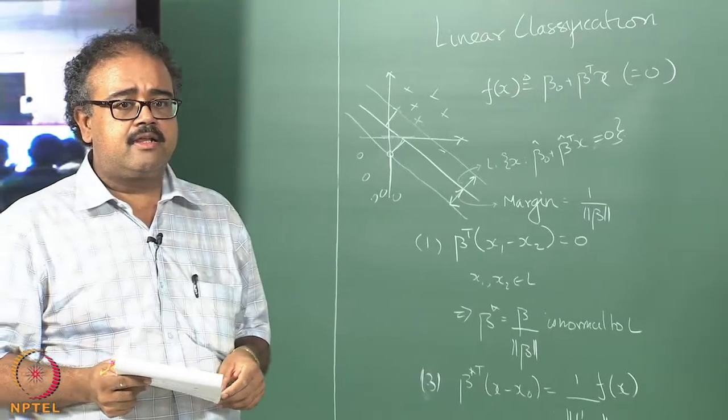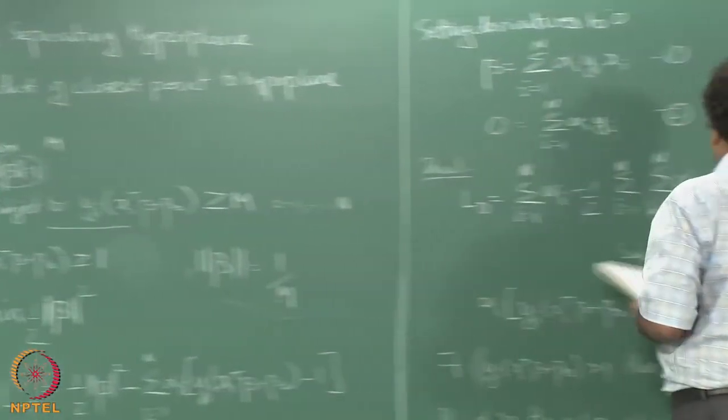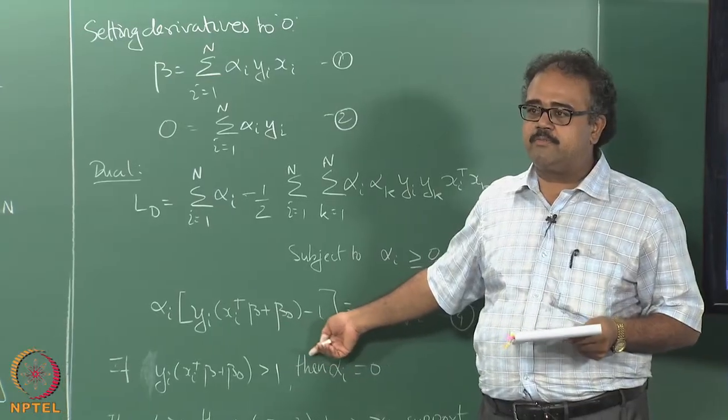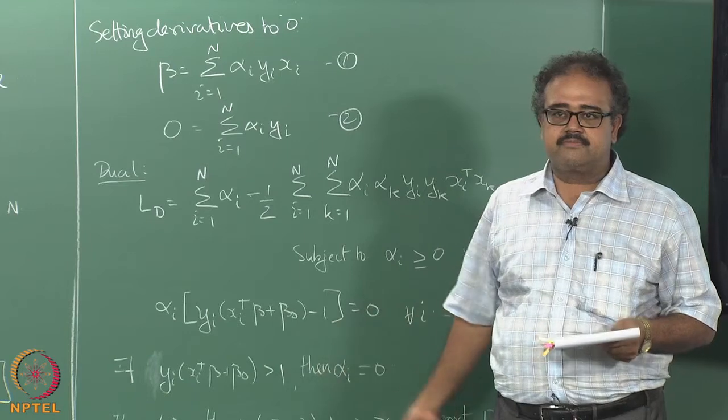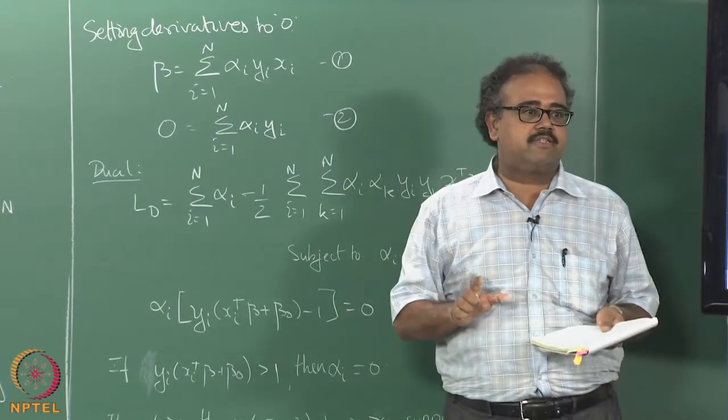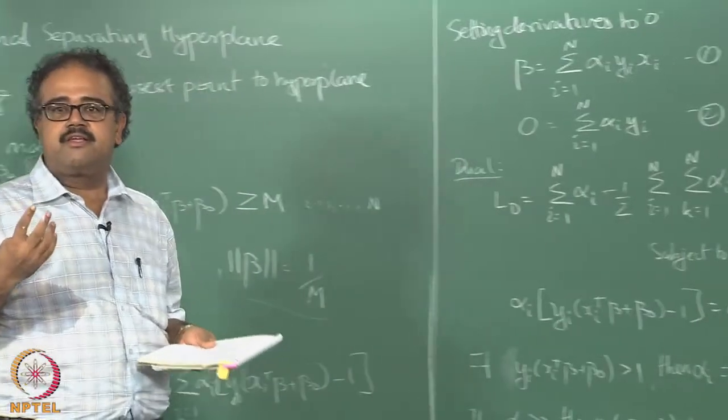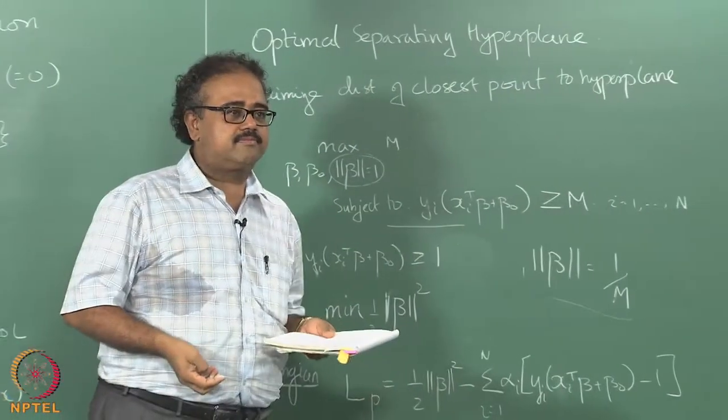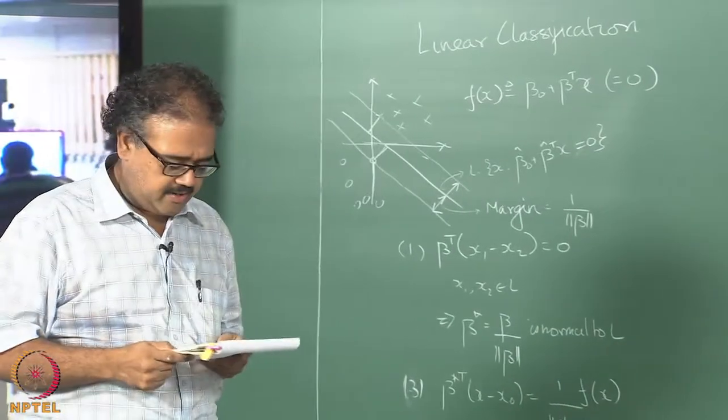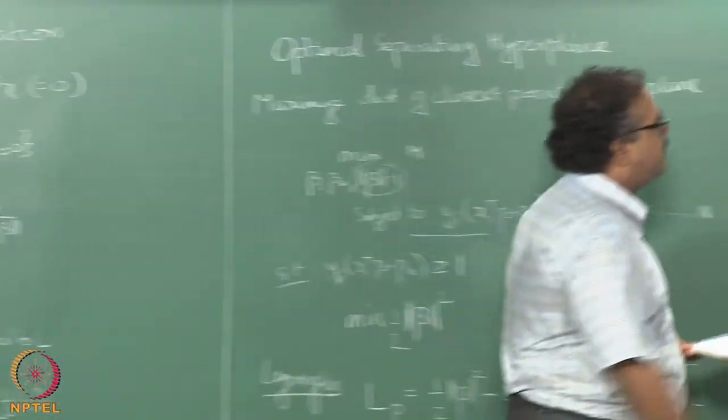What about beta naught? We can plug in any data point here and solve for beta naught. One of these support points you can plug it in here and solve for beta naught. Which support point do you pick? Ideally all of them should give you the same answer, but usually it does not happen because of numerical reasons. So what typically people do is they plug in all these support points, solve for beta naught, and take the average. Each one in turn, for every support point you are going to get slightly different beta naught - you just take the average. That is how you compute the hyperplane.